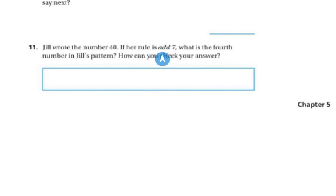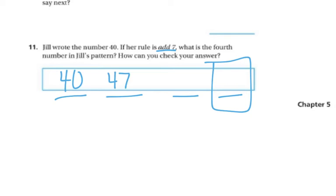Jill wrote the number 40. If her rule is to add 7, what is the fourth number in Jill's pattern? How can you check your answer? I'm going to start with 40, and I want to know the fourth number. So 1, 2, 3, 4. It says to add 7, so 40 plus 7 is 47, 47 plus 7 is 54, and 54 plus 7 is 61. So my answer is 61.